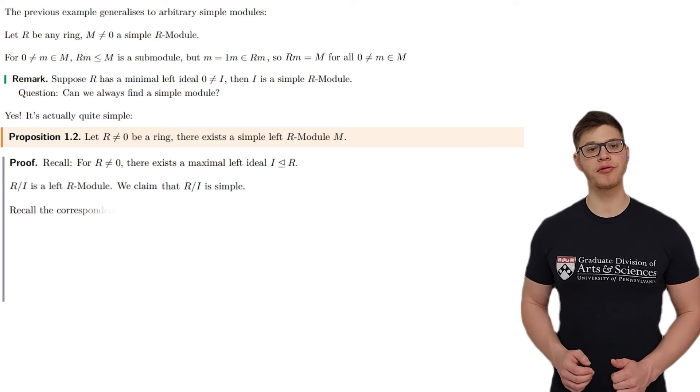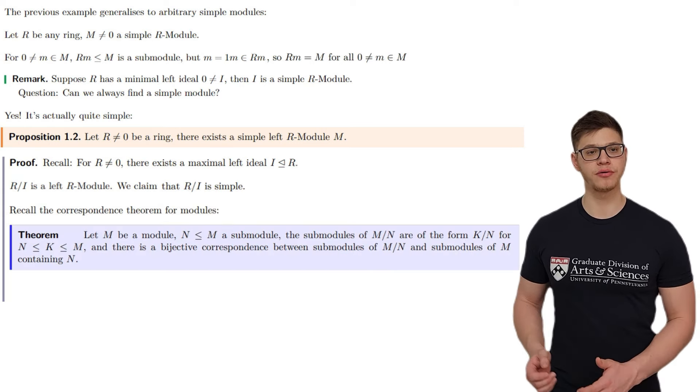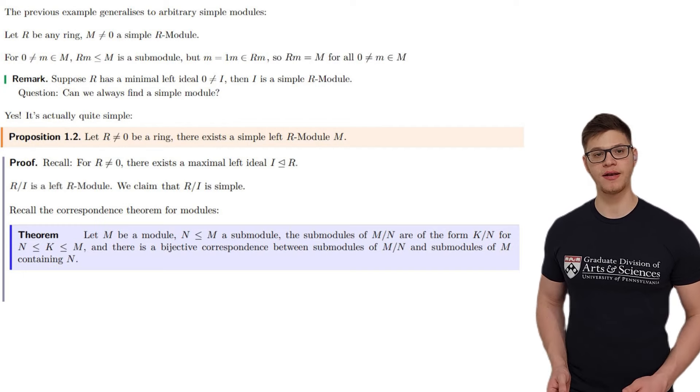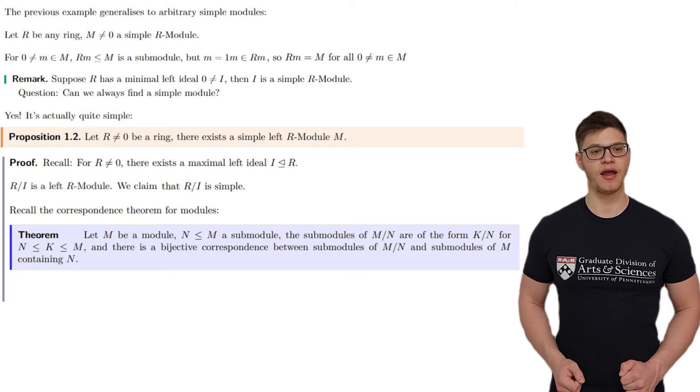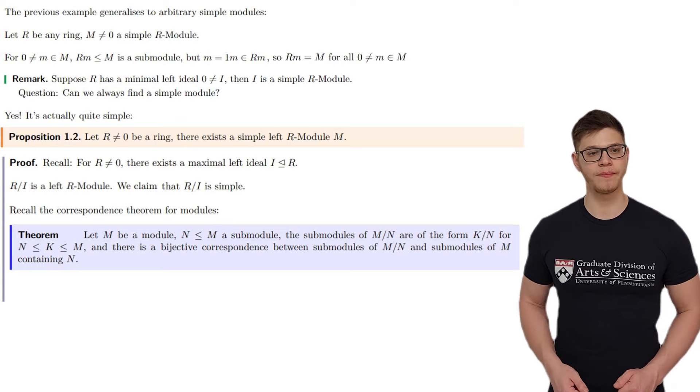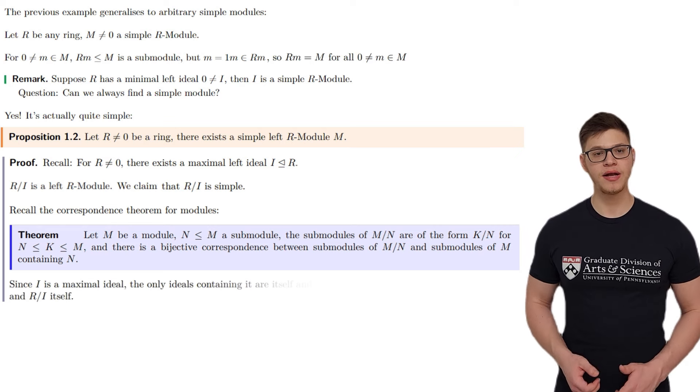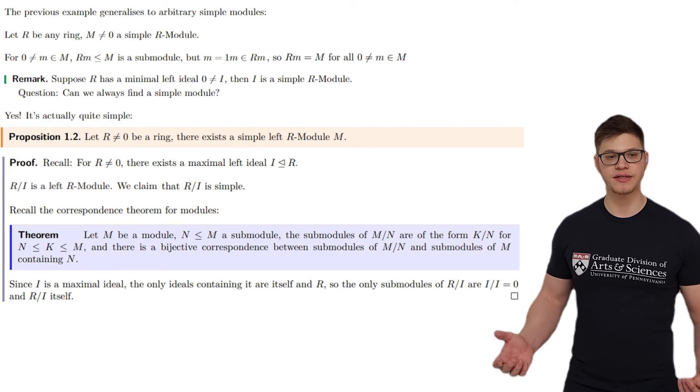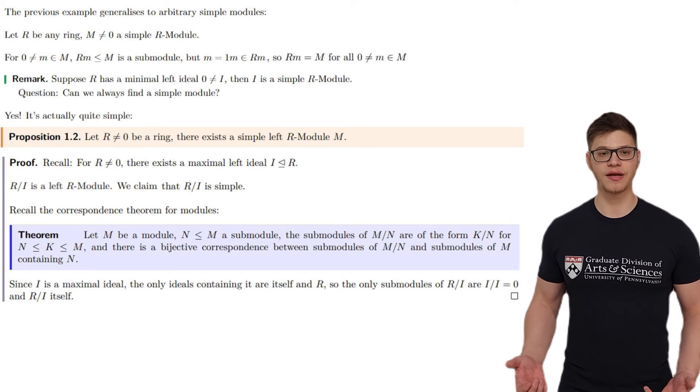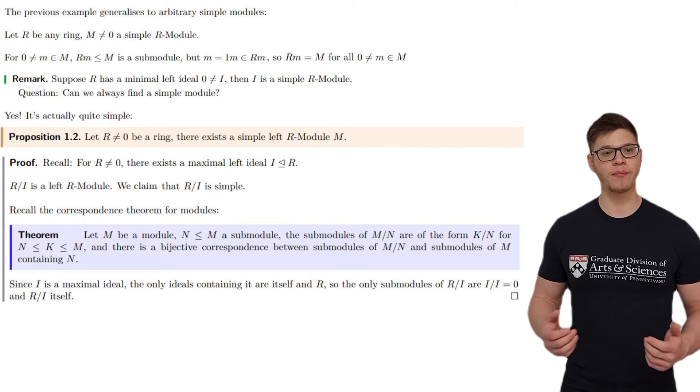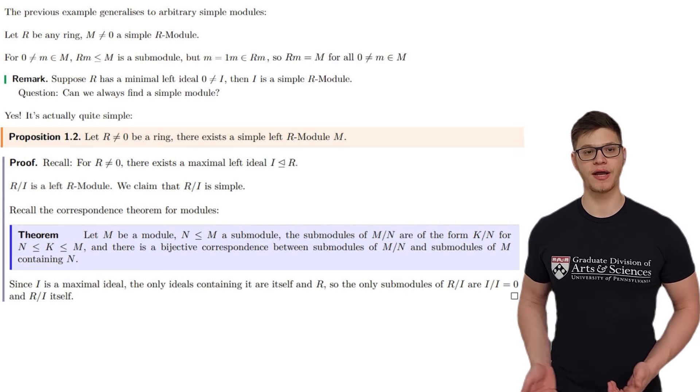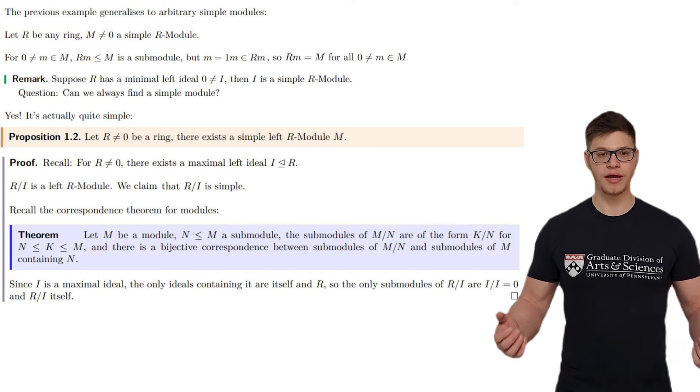We claim that R mod I is actually a simple R-module. For this, recall the correspondence theorem for modules, which states that if M is a module and N is a sub-module, then there is a bijective correspondence between sub-modules of M mod N and sub-modules of M containing N. Namely, if K is a sub-module containing N, then K mod N is a sub-module of M mod N. Since I is a maximal left ideal, the only left sub-modules of R, or equivalently left ideals, because that's the same definition in this case, that contain it are itself and the entire ring. So, by the correspondence theorem, R mod I has only two sub-modules, namely I mod I, which is the zero sub-module in R mod I, and R mod I itself, i.e., the entire module. So, it is simple by definition.